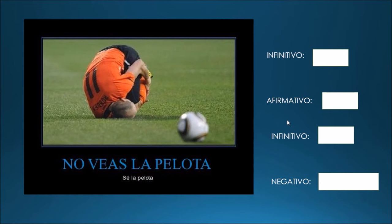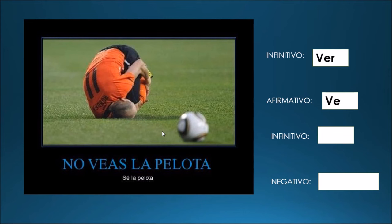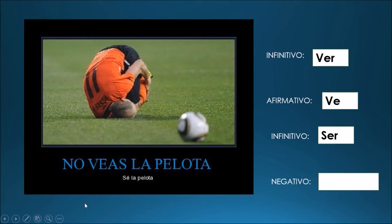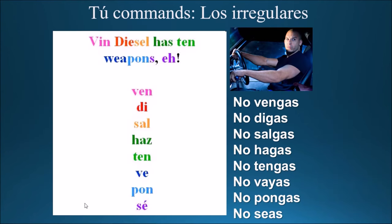No veas la pelota. Sé la pelota. Don't see the ball — be the ball. Here we have two commands. One is negative: no veas. El infinitivo: ver — to see. Let's change no veas to the affirmative: ve. Ve la pelota — see the ball. And next we have sé la pelota — be the ball. If you remember the Vin Diesel sentence, this is another one of our eight irregulars. El infinitivo de sé: ser. And notice here it has an accent. Y el negativo: no seas.